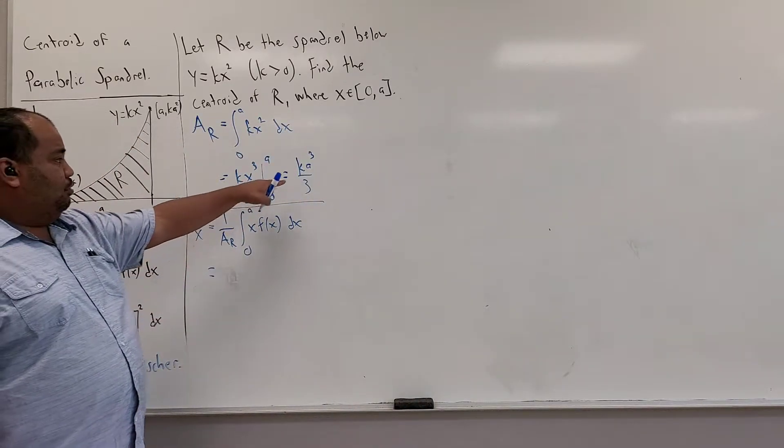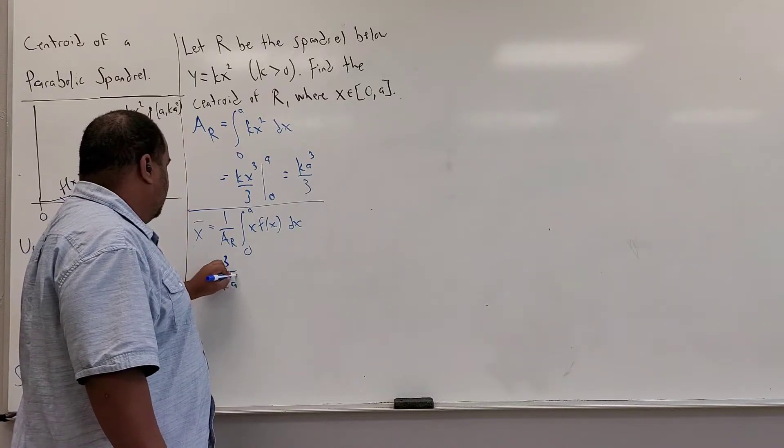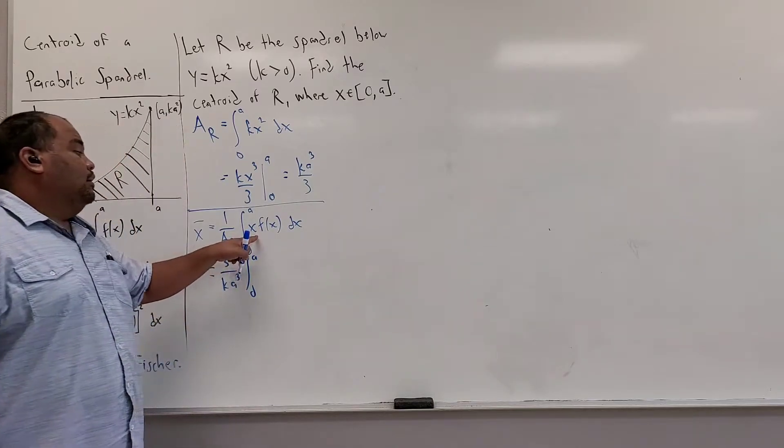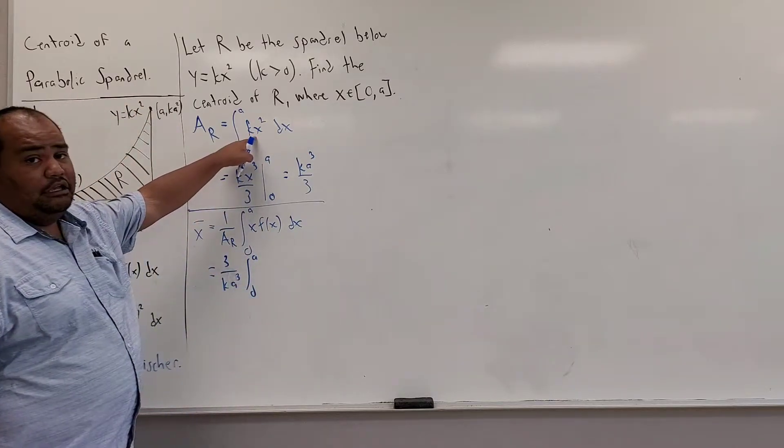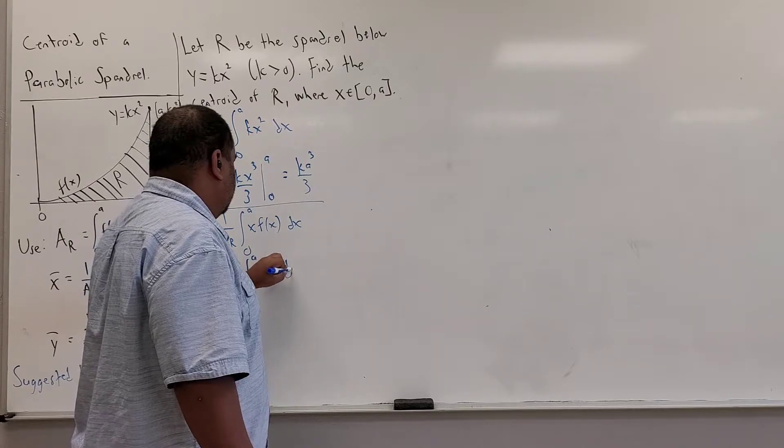1 over the area, well this is the area here, so I'll just write a specific, 3 over k a cubed times the integral from 0 to a of x times f of x. Well, this is x times this thing here, and so this is k times x cubed dx.